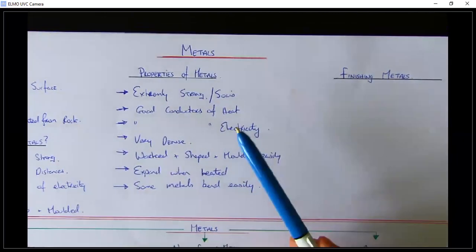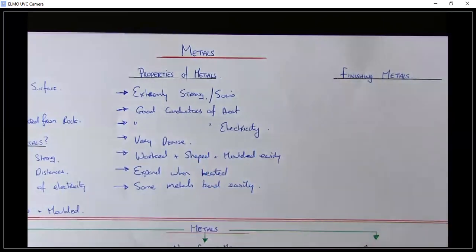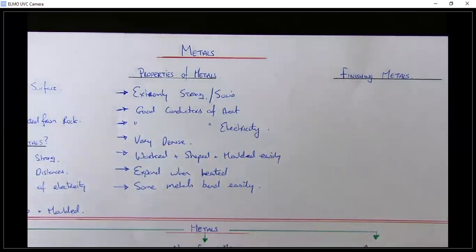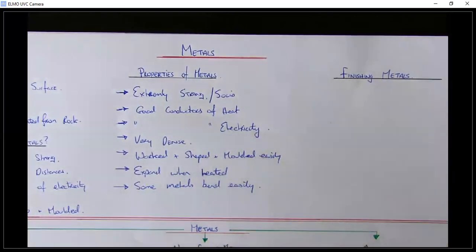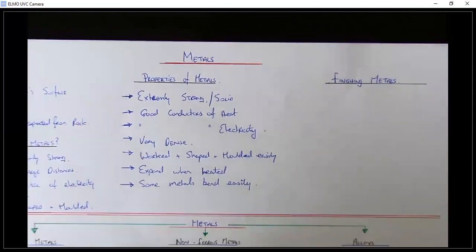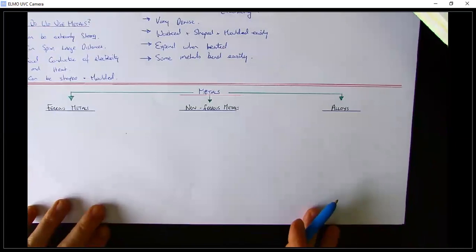Just to recap: metals are very strong and good conductors of heat. The easiest example — if you had a wooden spoon and a metal spoon in a pot of boiling water, the heat transfers up the metal spoon much quicker than the wooden spoon. Wood is not a good conductor of heat; metal is. Metals are also good conductors of electricity, used for cabling; they're very dense; they can be worked into shapes fairly easily; they expand when heated; and some bend easily. Those are the main properties of metals.